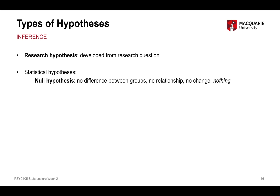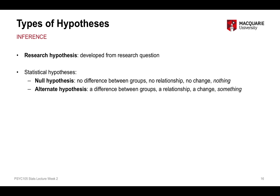The word 'null' in the null hypothesis means nothing — there's nothing going on. The null hypothesis always says that, even though its particular expression will change depending on what statistical test we're talking about. The alternate hypothesis is the opposite: it says there is some difference between groups, there is some relationship between variables, there is some change over time — something is going on. They're both very broad hypotheses, and why that is ties into statistical testing, which we'll cover in week five.